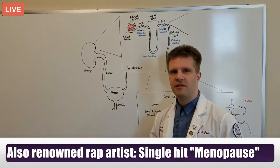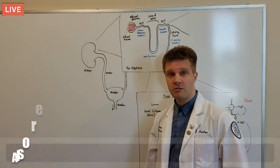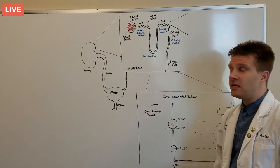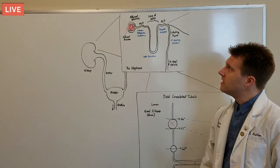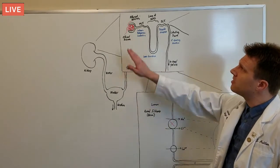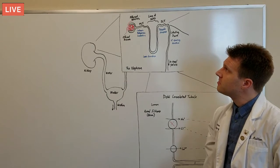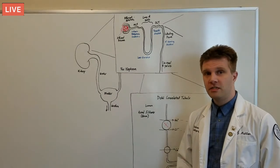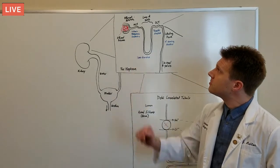Thiazide diuretics act on the kidney — they increase urine outflow. Let's take a closer look at how they work. The functional unit of the kidney is called the nephron. Blood enters the nephron through a complex jumble of arteries called the glomerulus. Plasma, nutrients, and toxins enter the nephron through Bowman's capsule.